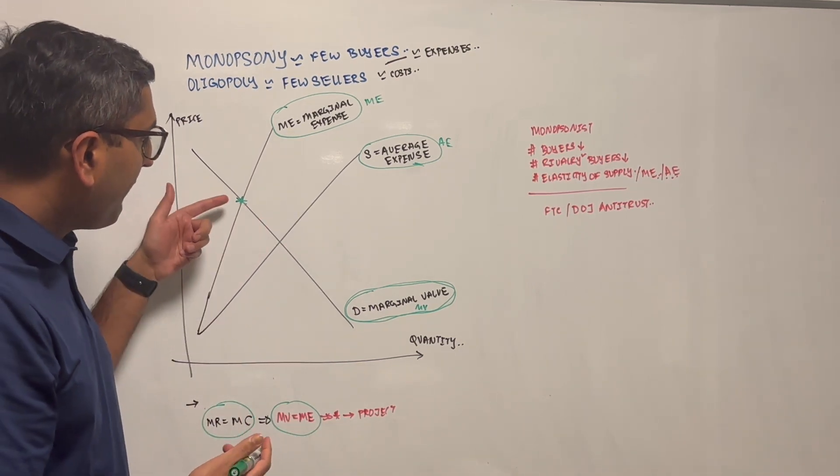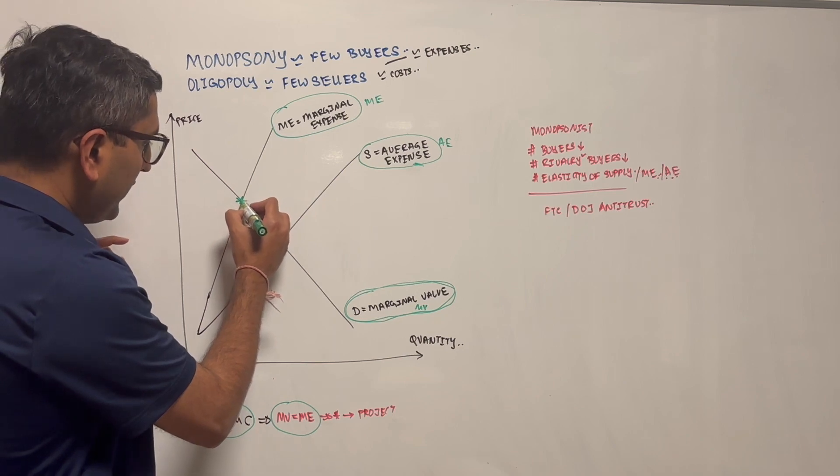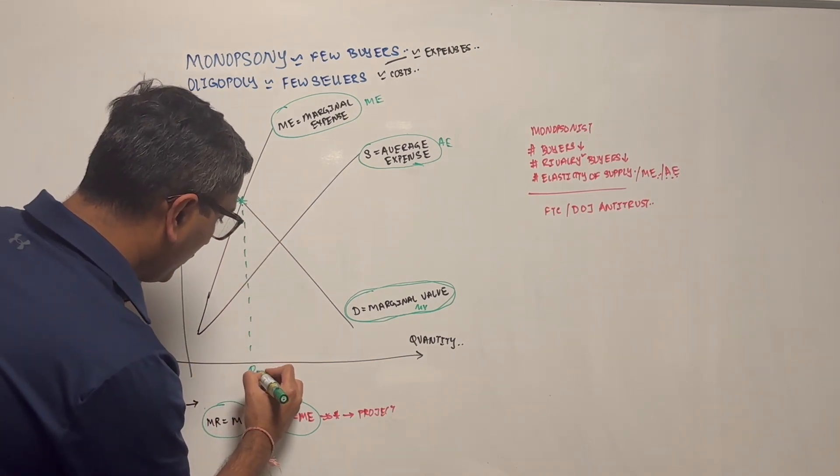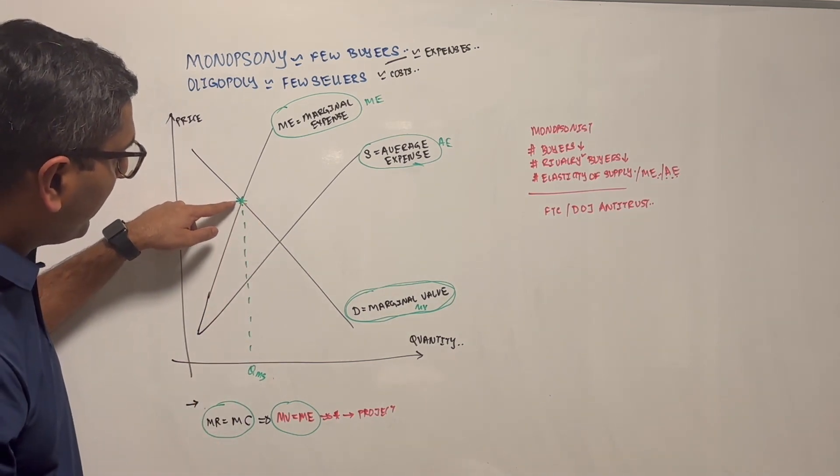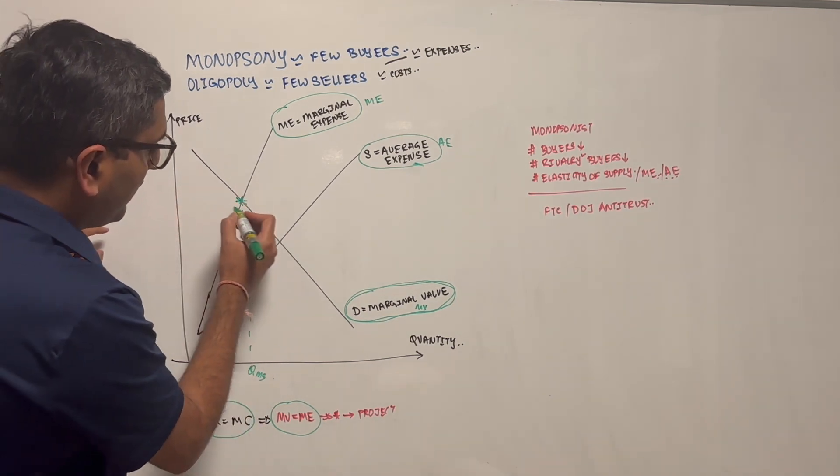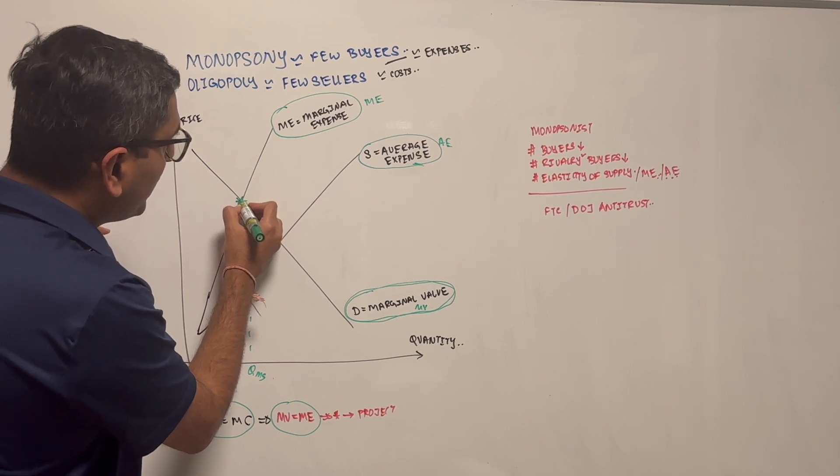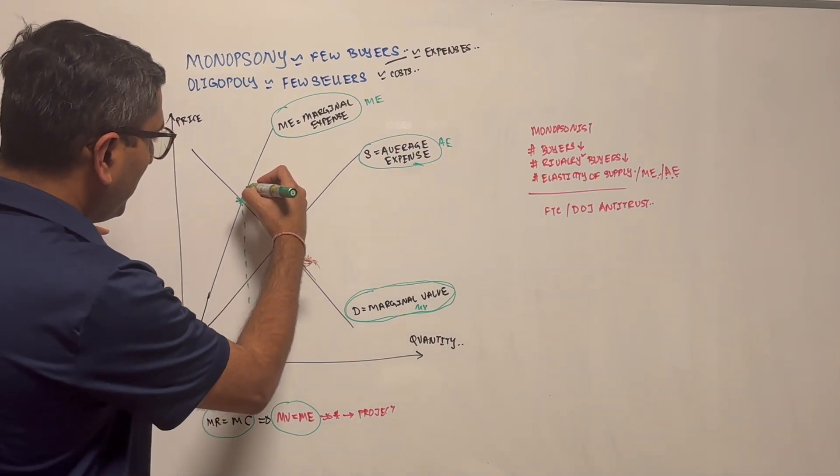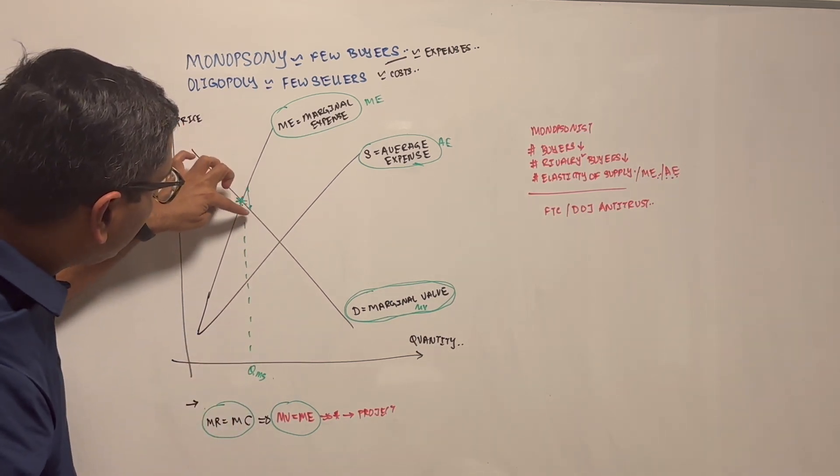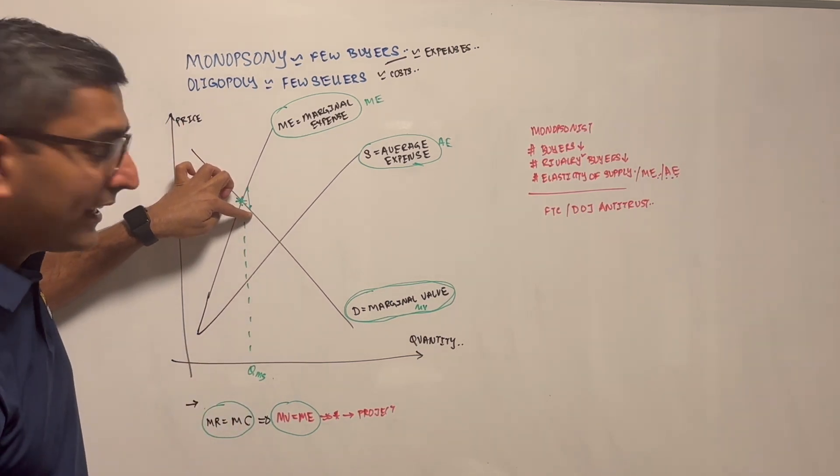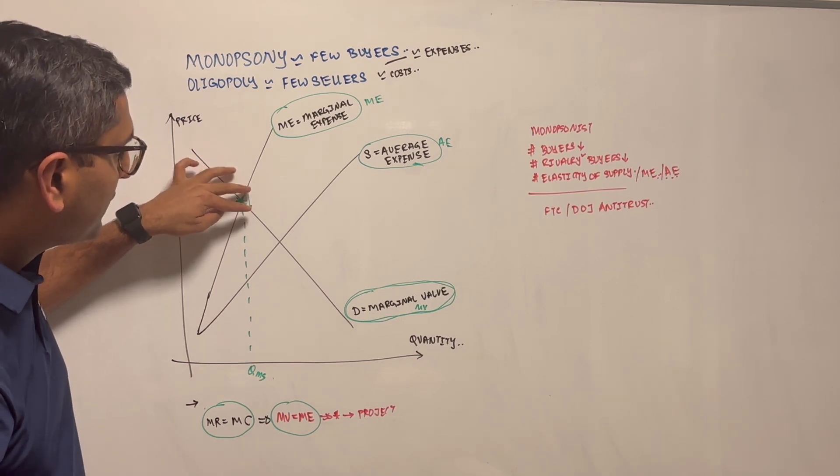So basically, at this point, if you look at this quantity Q monopsonist, we get this quantity where the marginal value that you get is equal to the marginal expense. But if you were to go here, let's say if I were to go here, you see my expense is greater than my value that I get, so I'm actually losing out. And that's why we see this is not a good place for you to be.